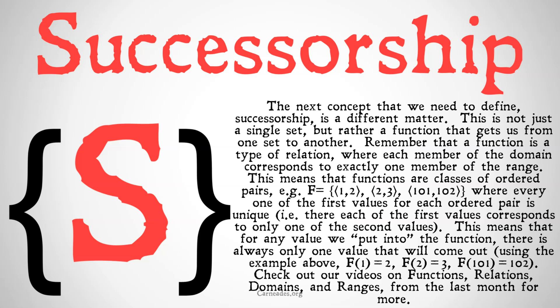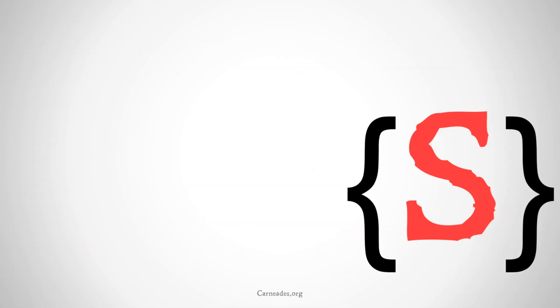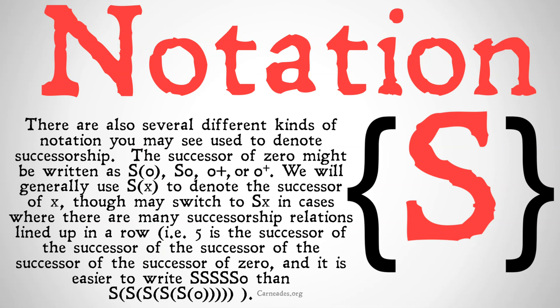All of that is to understand that when we're talking about successorship, we're going to be defining a class that is a set of ordered pairs — a function such that each number in the domain only corresponds with one number in the range. There are also several different kinds of notation you may see used to denote successorship. The successor of 0 might be written as s(0), s0, 0+, or 0⁺. We will generally use s(x) to denote the successor of x, though we may switch to sx when there are a bunch of successorship relationships lined up in a row — for example, 5 is the successor of the successor of the successor of the successor of the successor of 0, so it's easier to write sssss0 than all of that with a bunch of parentheses.